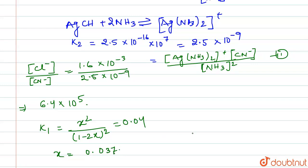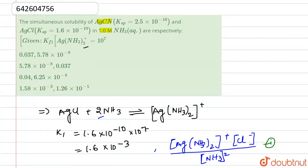The concentration for [CN-], this will be 0.037 divided by 6.4 into 10 to the power 5 which equals to 5.78 into 10 to the power minus 8. So we have concentration of CN minus. Let us check if it matches with our options. Yeah it matches with B. So our answer is B.